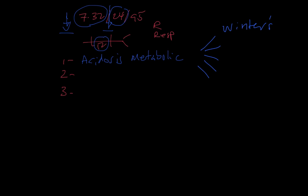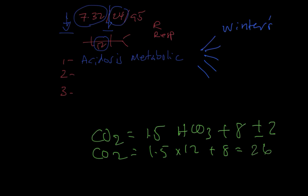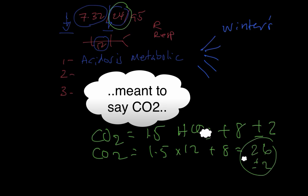The predicted CO2 equals 1.5 times bicarb plus 8, and everything, of course, is plus minus 2. In this case, predicted CO2 will be 1.5 times 12 plus 8 equals 26, of course, plus minus 2. So the predicted bicarb is very much similar to the measured bicarb. There is no second primary disorder.